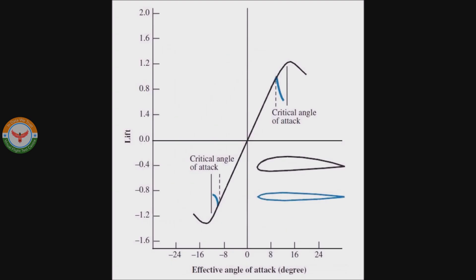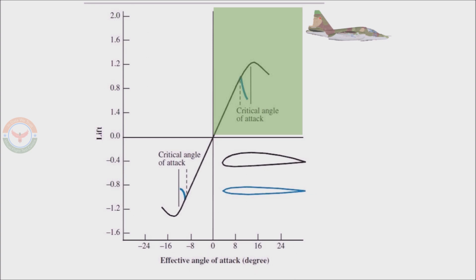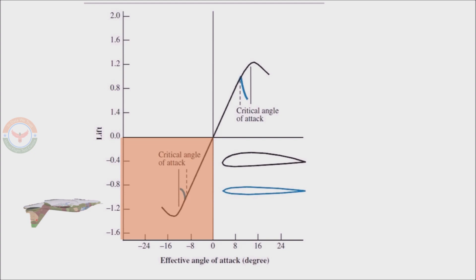This graph shows how the lift force varies with angle of attack for a symmetric aerofoil. An aeroplane flying straight and level will fall in the shaded region of this graph, where you will have a positive angle of attack leading to positive lift force. The aircraft flying inverted will fall in the region shaded red — the angle of attack will be negative and the corresponding lift force will also be negative.